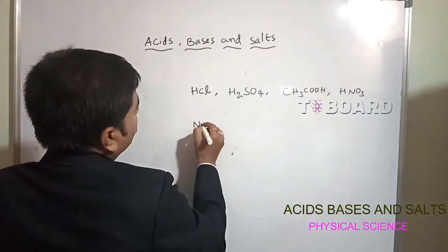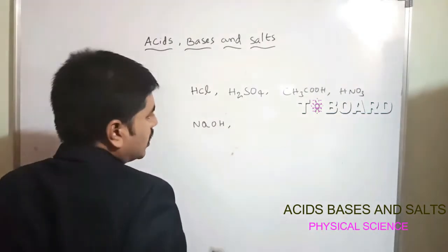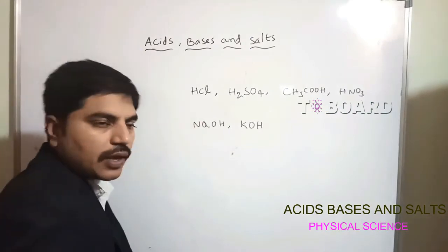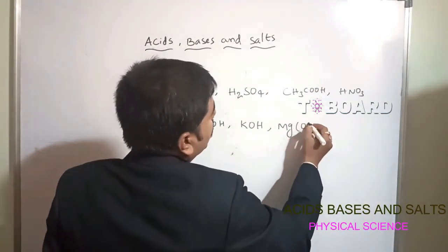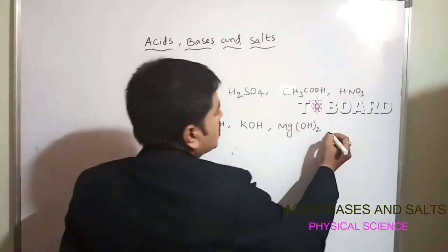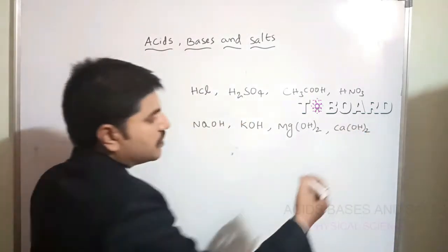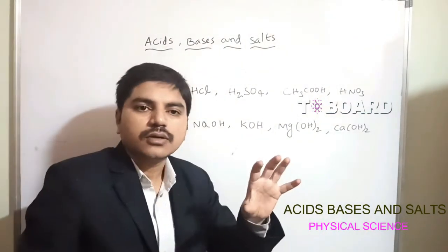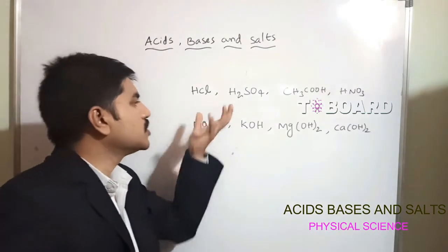For bases, we have sodium hydroxide NaOH, potassium hydroxide KOH, magnesium hydroxide Mg(OH)₂, and calcium hydroxide Ca(OH)₂. These are the different chemical substances I am going to take in particular test tubes.